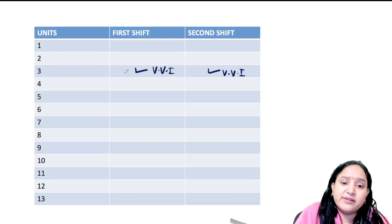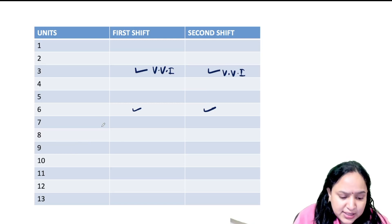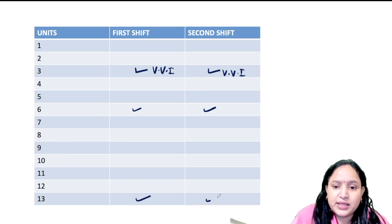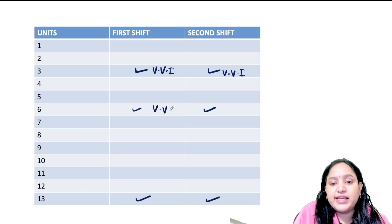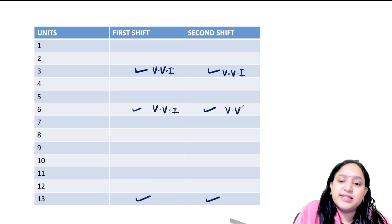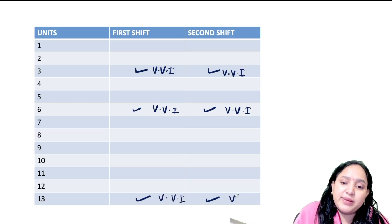So the most important units are unit number 3, I am saying very very important, very very important in both shifts. If there will be one question difference, then there will be no major difference. Similarly unit number 6, similarly unit number 3, 6, and 13. Yes, these 3 units are extremely important units.